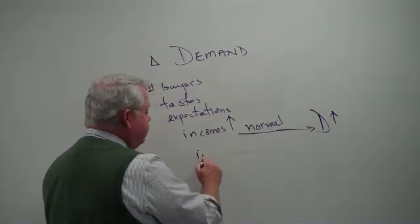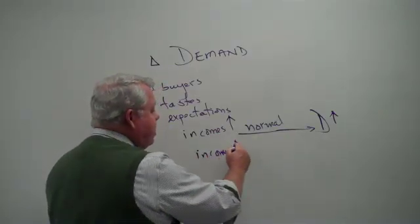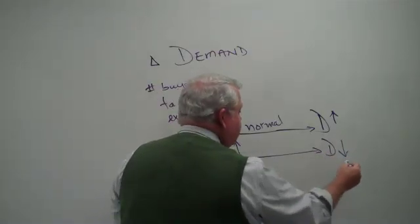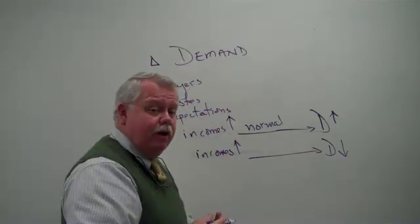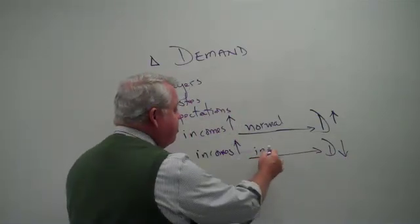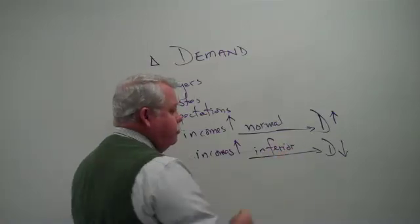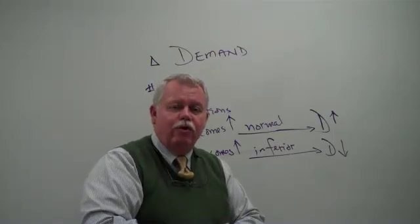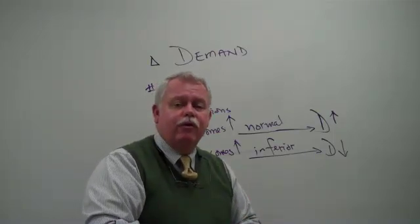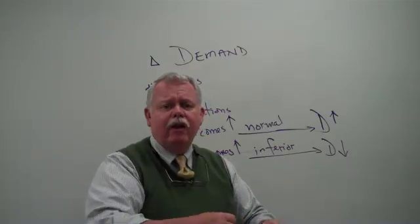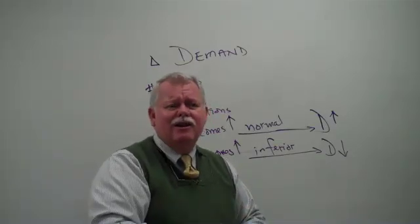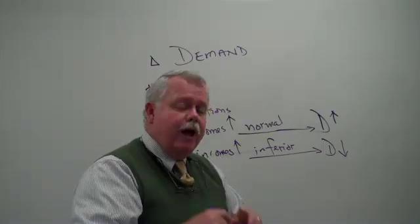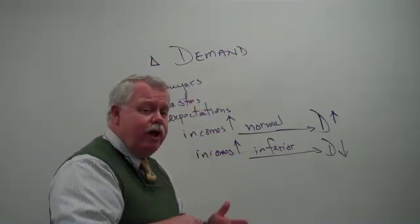But sometimes when incomes increase, people's demand for some products decreases. They buy less of it. Those are what we call inferior goods. Those might be goods like generic products or ramen noodles is a common example we use. Or the meat product spam, sometimes referred to as an inferior good. When people get more money, they buy less of that because they're going over to buy what they consider to be better products or more desirable products.